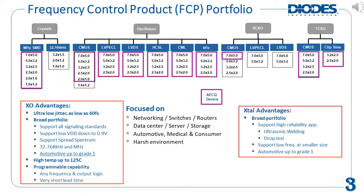The devices in the purple boxes are AutoMode qualified. Because of the broad range of different features and performance specifications of FCP devices, Diodes created a powerful online search tool to help customers pinpoint the exact device that will best meet their needs.